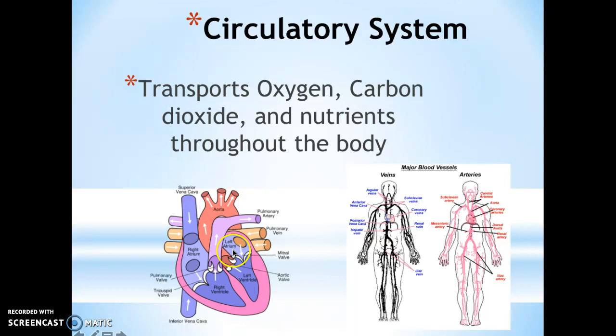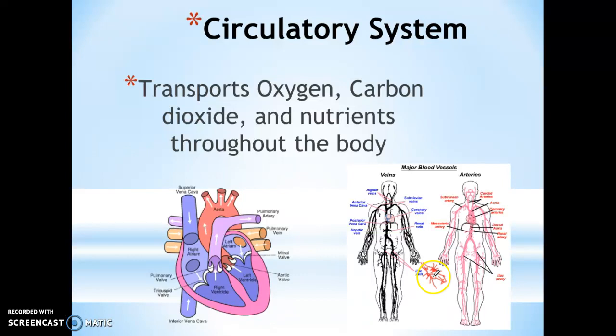The heart's main job is to basically take in oxygenated blood from the lungs, and once it gets it, it delivers it all throughout the body via the arteries. Once the blood gets to the very end of the arteries, you have these little things called capillaries — very tiny tubes where the oxygen will be delivered into the cells. That's what we call a capillary.